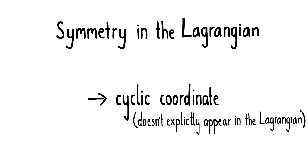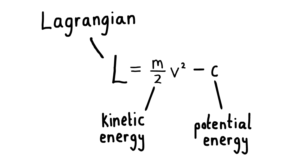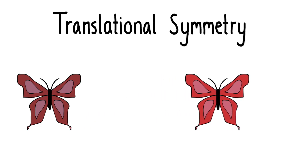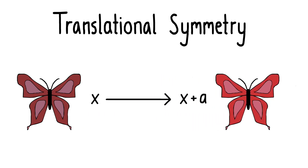Let's consider a Lagrangian where the potential energy is some constant c. Since x doesn't explicitly appear in this Lagrangian, x is a cyclic coordinate. The Lagrangian doesn't depend on x, so it stays the same when we replace x with x plus a. In other words, our system has translational symmetry.